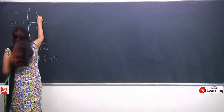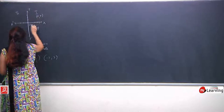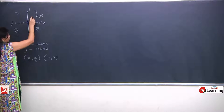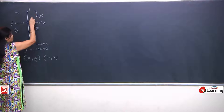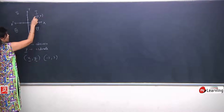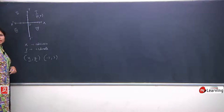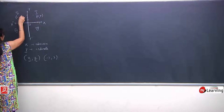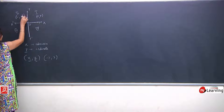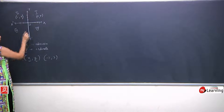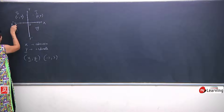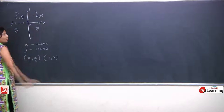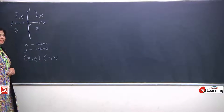First quadrant mein jo values aayengi woh hamesha plus aur plus ki aayengi, because x axis positive hai aur y axis positive hai, toh yahan jo bhi point locate hoga uski value hamesha plus and plus aayegi. Second quadrant mein hamesha x ki jo value hogi woh negative hogi and y ki jo value hogi woh positive hogi — why? Because x left side mein ja raha hai jo negative consider karta hai, and y upwards direction mein ja raha hai jo positive consider karta hai.